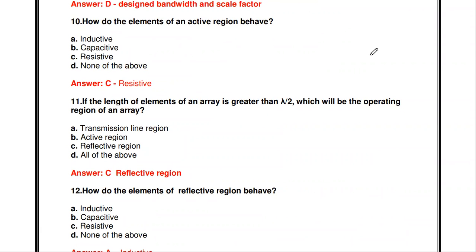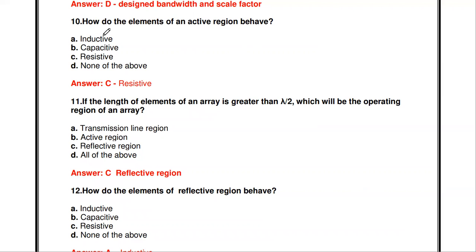The log periodic dipole array is divided into three regions: the active region, the transmission region, and the reflective region, classified depending on the size of the dipoles. The center region is the active region. The question is how do the elements of the active region behave — the answer is they behave like a resistive element.